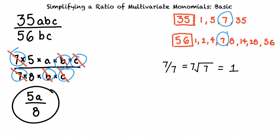So to simplify a ratio of a multivariate monomial, we just find the greatest common factor of the numerator and denominator, take away the common factors, and solve.